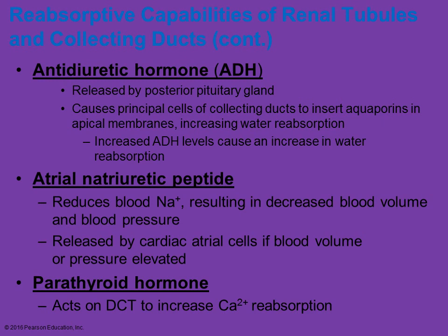The antidiuretic hormone, ADH, is certainly another hormone that plays a huge role — it helps increase water reabsorption. If you increase the levels of ADH, then you increase the amount of water that's reabsorbed, leaving less water in the urine. Atrial natriuretic peptide helps to reduce the amount of sodium in the blood, resulting in decreased blood volume and decreased blood pressure — it tends to be released when blood volume or pressure is too high. Parathyroid hormone also plays a role in the distal convoluted tubule to help increase the amount of calcium being reabsorbed.